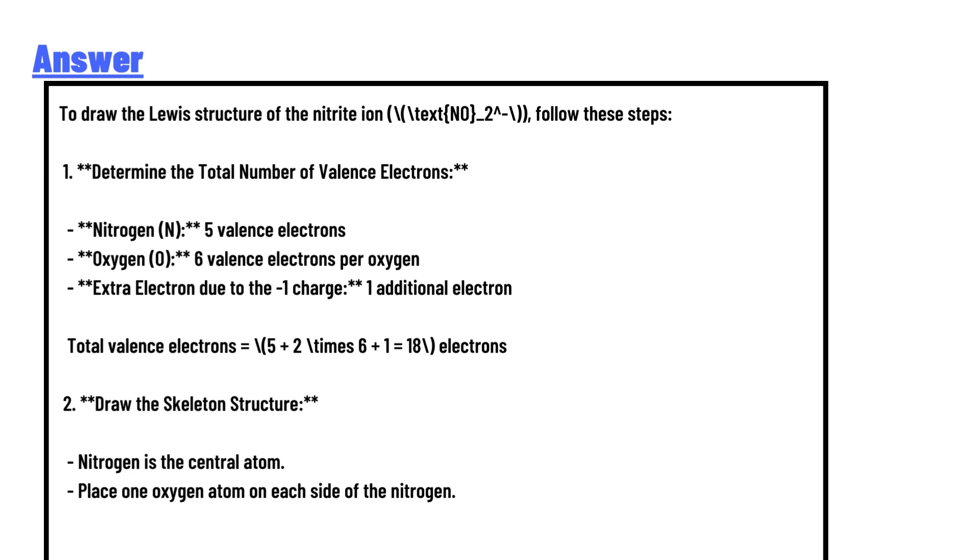To draw the Lewis structure of the nitrite ion, follow these steps. Determine the total number of valence electrons: Nitrogen has 5 valence electrons, oxygen has 6 valence electrons per oxygen, plus an extra electron due to the -1 charge, giving 1 additional electron. Total valence electrons equals 5 plus 2 times 6 plus 1, which equals 18 electrons.